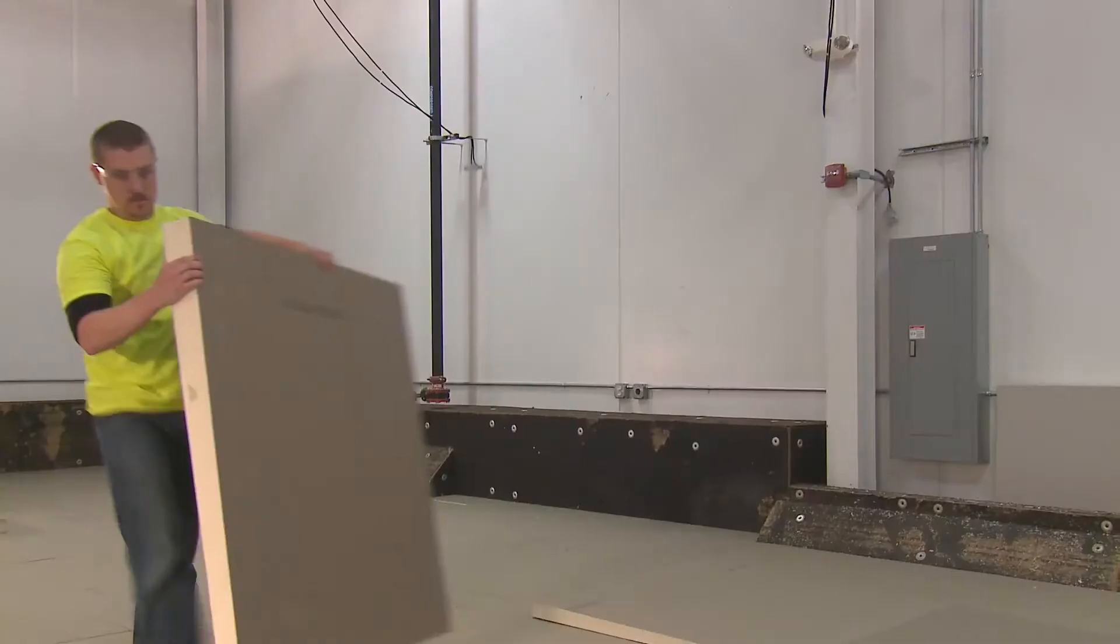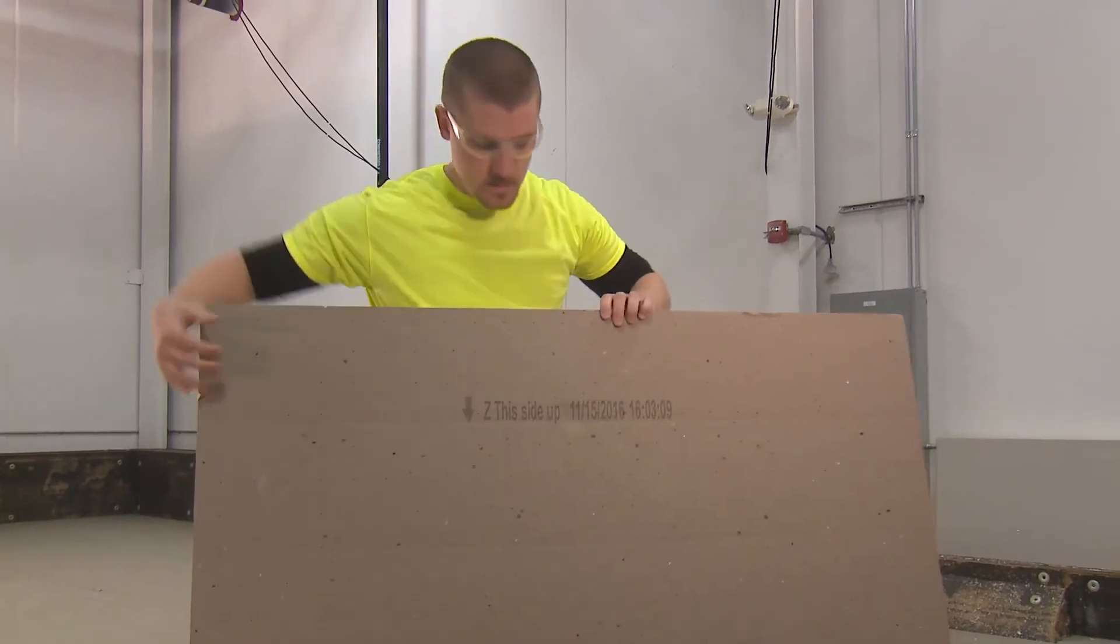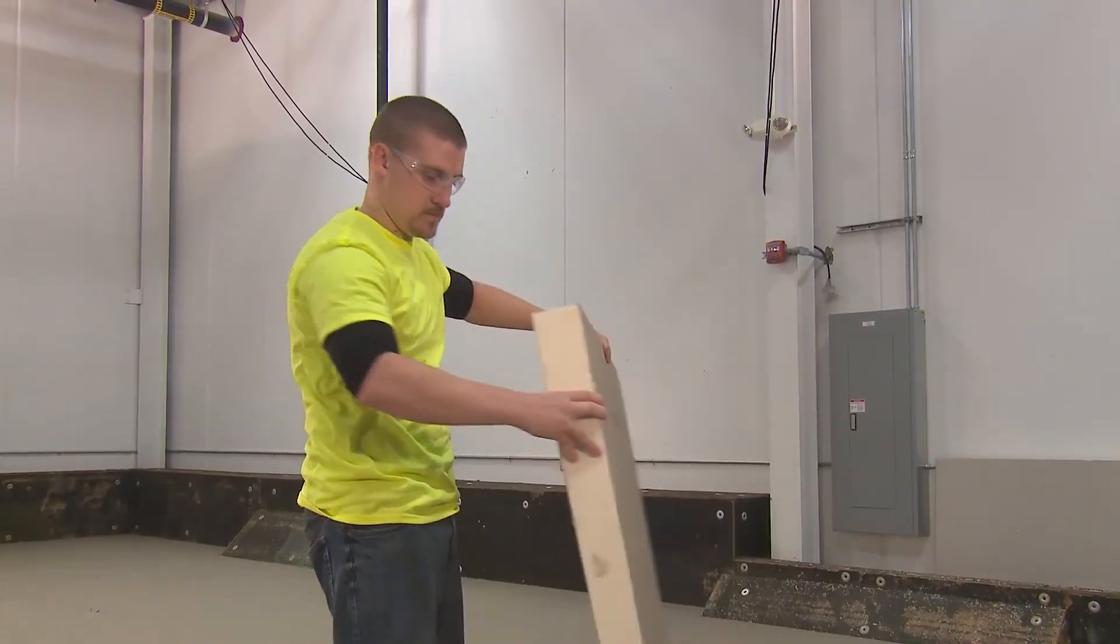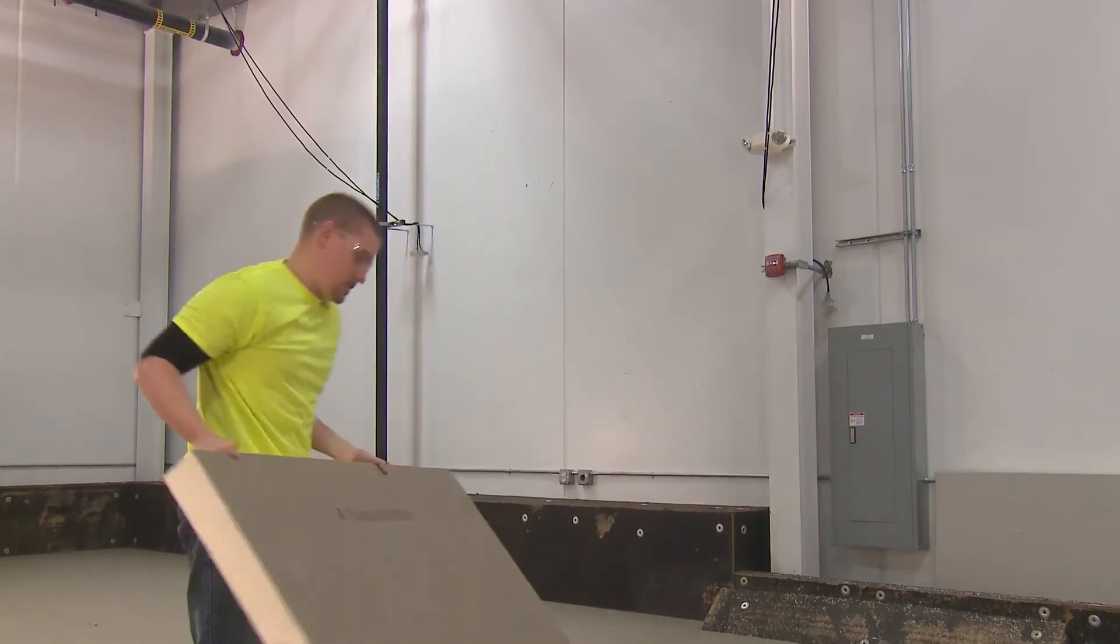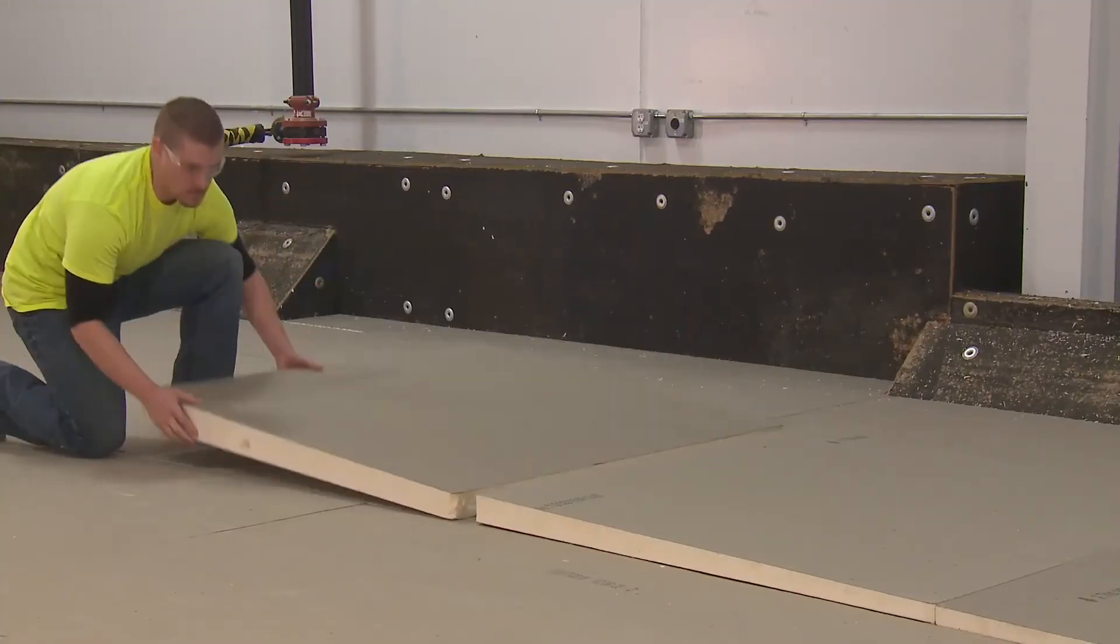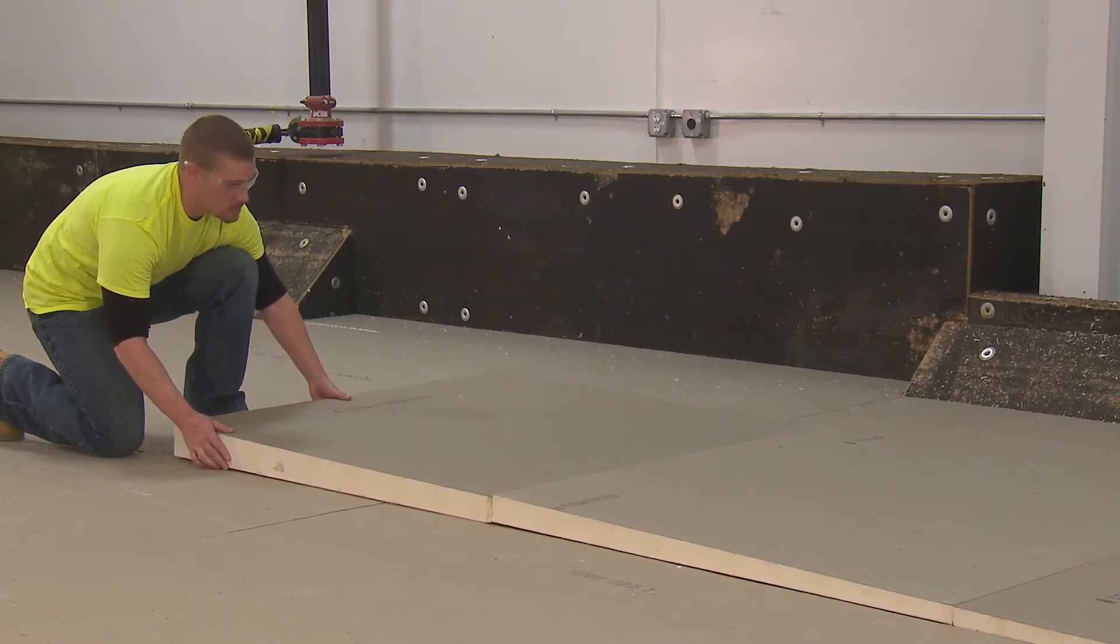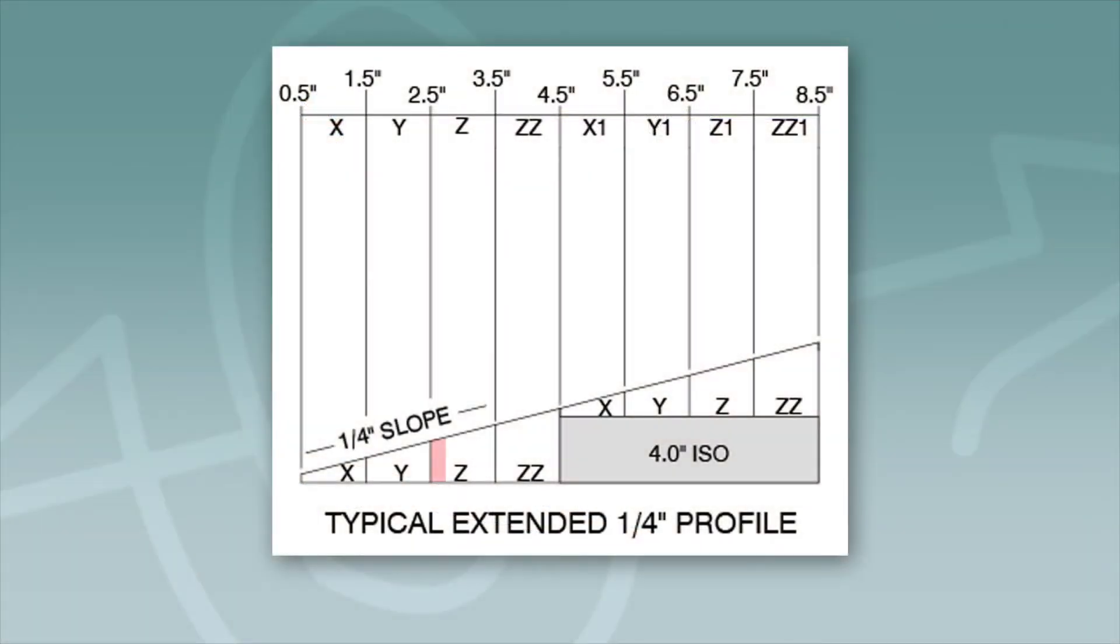The third panel in a typical 1/4 inch extended panel profile is the Z panel, which runs from 2.5 inches to 3.5 inches in thickness. We lay the panel down, matching the 2.5 inch low side of the Z panel to the 2.5 inch high side of the Y panel.